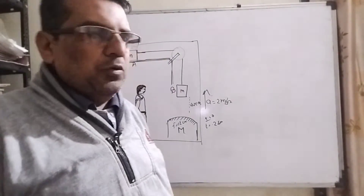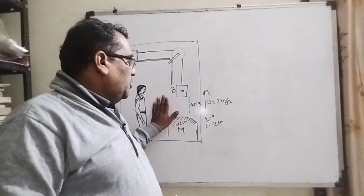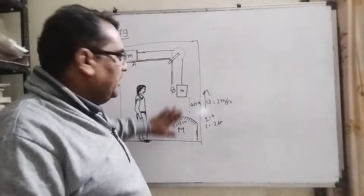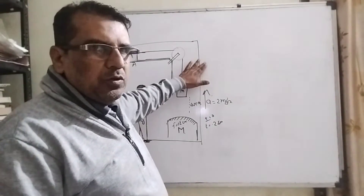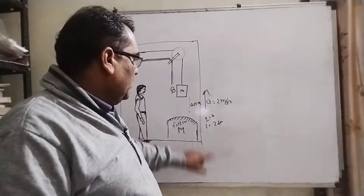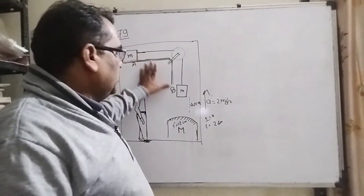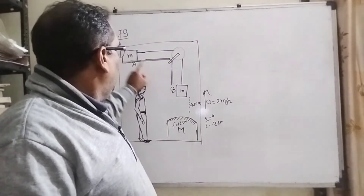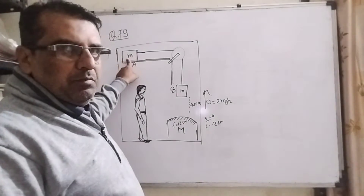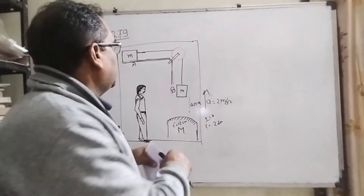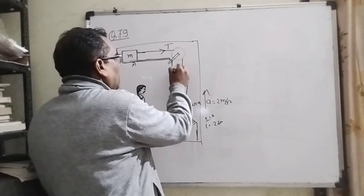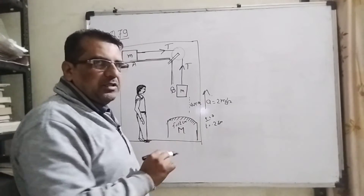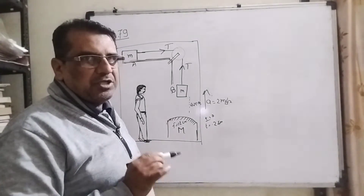तो चलिए, हम question करते हैं. Question में क्या कहा गया है, पहले वो समझते हैं. सबसे पहले यह elevator है जो की ऊपर की ओर जा रहा है 2 meter per second square से. इसमें दो system है — नीचे mirror रखा हुआ है, convex mirror, और यहां पर M block है जिस पर tension लग रहा है. At t equal to zero की condition में, इस पर एक pseudo acceleration भी लगेगा.